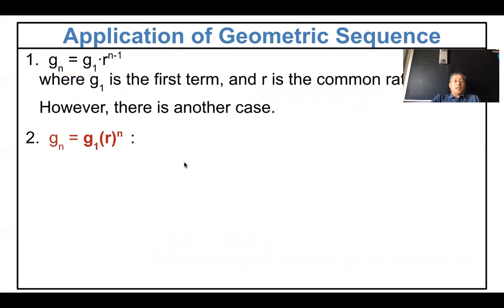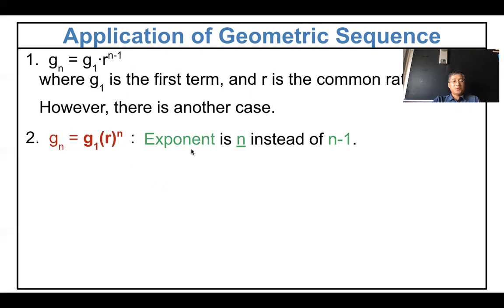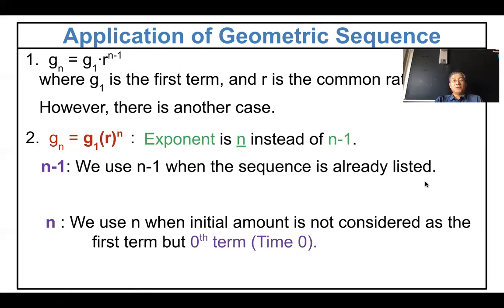Now we know the explicit formula. g(n) equals the first term times r to the n power. The explicit formula is g(n) = g1 times r to the n minus one power. But sometimes the exponent is n instead of n minus one. We need to understand when to use each form.